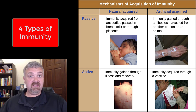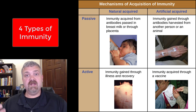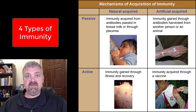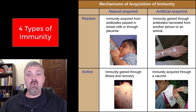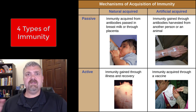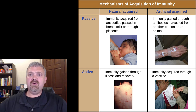Then we have passive versus active. Passive is something that's done to you or done for you, whereas active is something that your immune system has to do on its own. So let's go through each of the four categories.